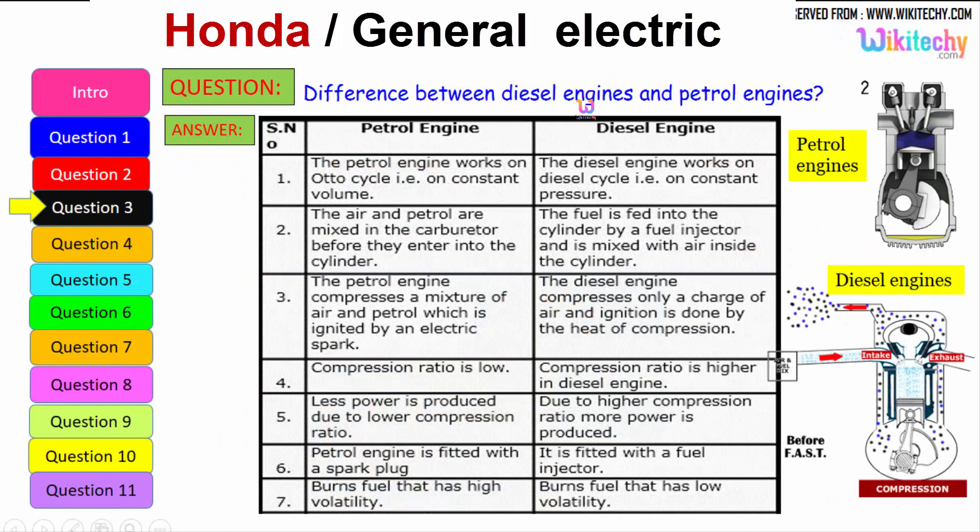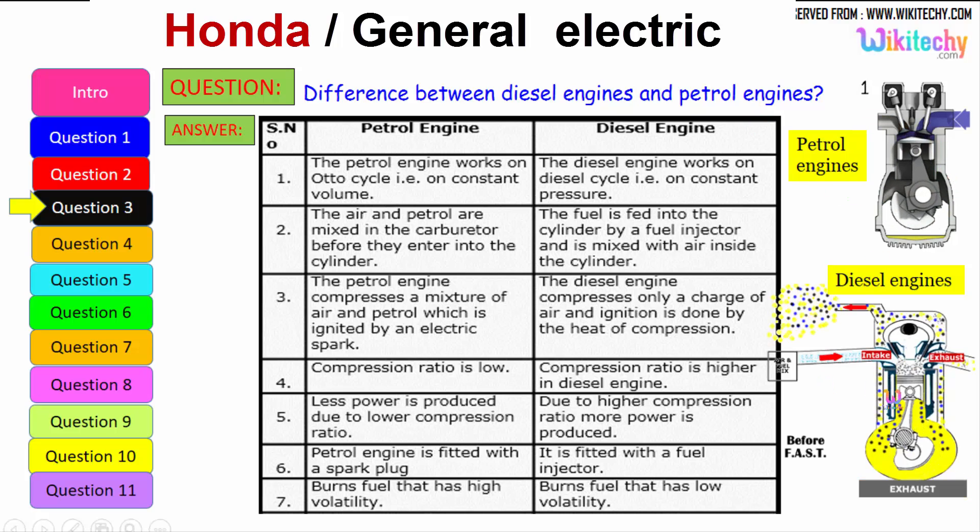Let us see the difference between diesel engine and petrol engine. The petrol engine works on Otto cycle, therefore on constant volume, whereas the diesel engine works on diesel cycle on constant pressure. The air and petrol are mixed in the carburetor before they enter into the cylinder. The fuel is fed into the cylinder by a fuel injector and is mixed with the air inside the cylinder. The petrol engine compresses a mixture of air and petrol which is ignited by an electrical spark. The diesel engine compresses only a charge of air and ignition is done by the heat of compression.